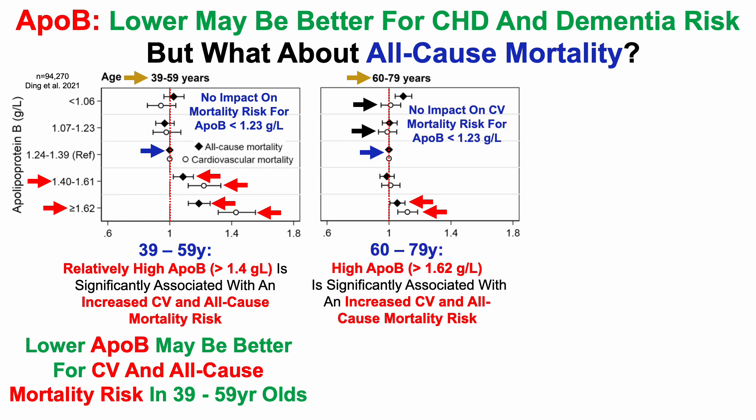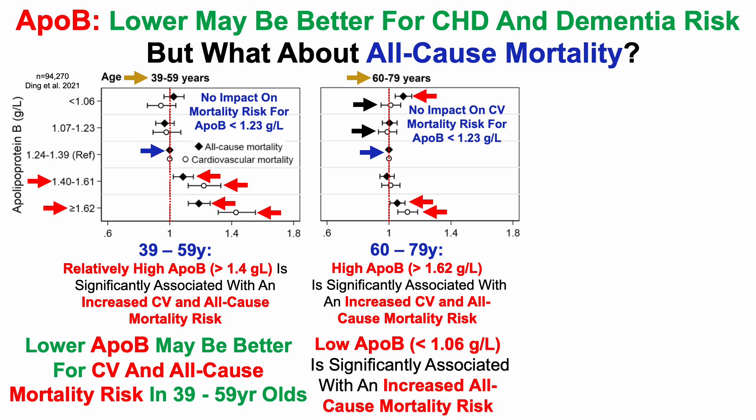So what about lower levels? We can see that there was no impact on cardiovascular mortality risk when APO-B was less than 1.23 grams per liter. But notice that at the lowest level of APO-B — less than 1.06 grams per liter — there was a significantly increased all-cause mortality risk. So that argues against the idea that lower is always better for APO-B, as relatively low APO-B in the 60 to 79-year age range was associated with an increased all-cause mortality risk.